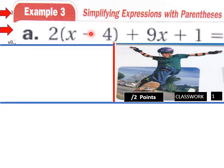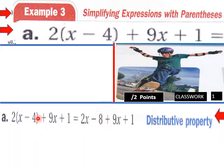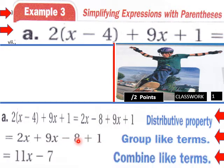Example 3: simplifying expressions with parentheses. We have 2 times the quantity x minus 4, plus 9x plus 1. To simplify this, we're going to multiply 2 times x and 2 times negative 4, and we get 2x minus 8 plus 9x plus 1. Now we combine like terms, grouping them: 2x plus 9x minus 8 plus 1, and we end up with 11x minus 7. A much simpler expression.